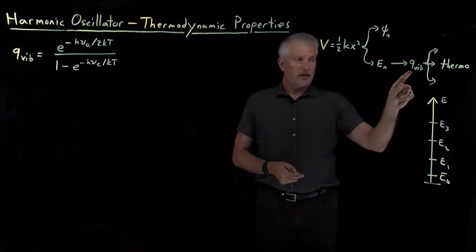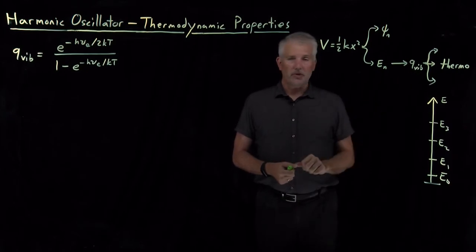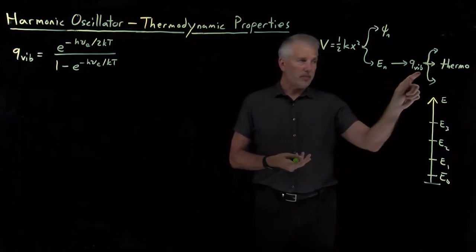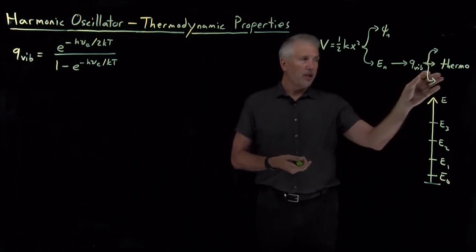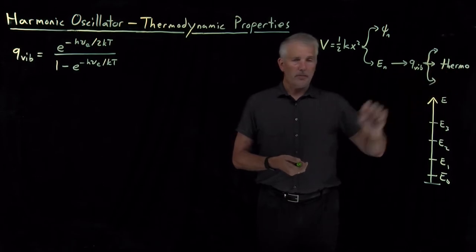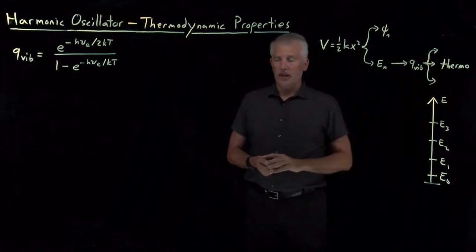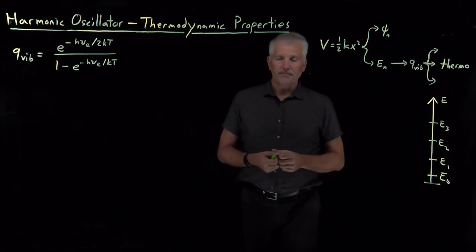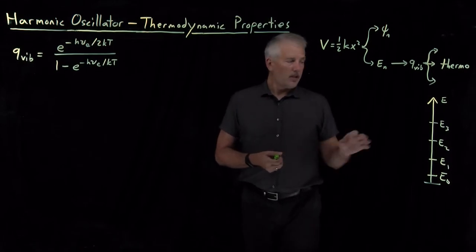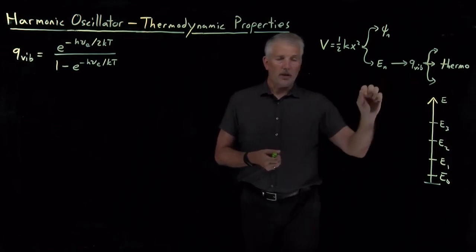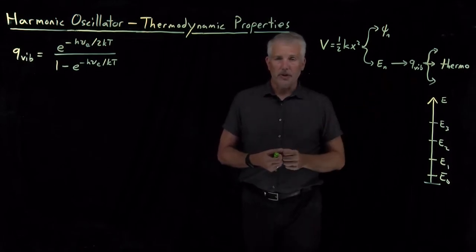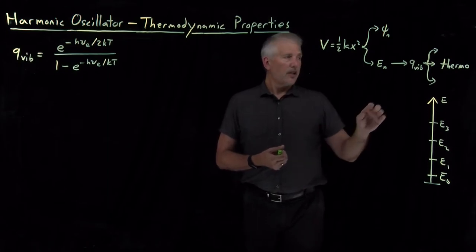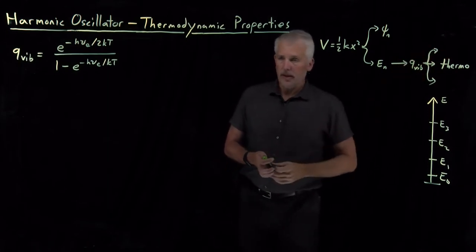The next step, as in previous examples like the rigid rotor and the particle in a box, will be to use that partition function to derive some thermodynamic properties. We're about to learn the properties of the vibrational motion of harmonic oscillators — diatomic molecules that we can treat as harmonic oscillators — such as the energy or pressure and so on.